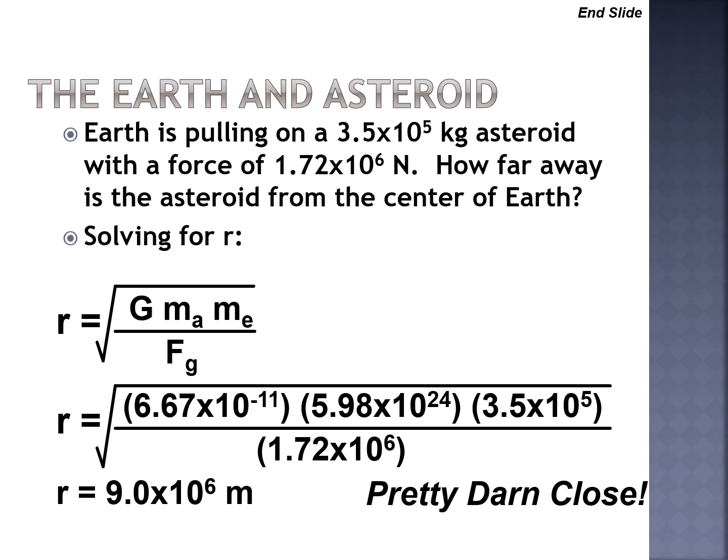After plugging into the calculator, we get a distance of 9.0 × 10⁶ meters — that's 9 million meters. It sounds far, but keep in mind Earth's radius is about 6.38 × 10⁶ meters, so the asteroid is actually quite close — within one Earth radius of the surface.